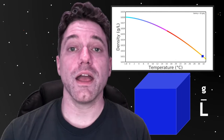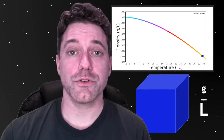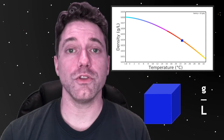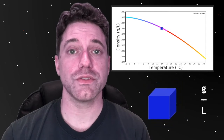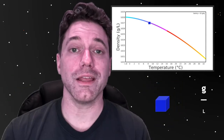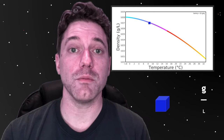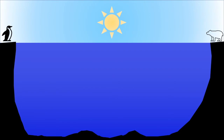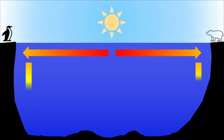Conversely, as temperature decreases, the volume of the cube will decrease, compacting the water and therefore making it more dense. Now, if we consider this schematic of the ocean interior, as warm equatorial water moves towards the poles near the surface, this water will get colder and more dense, making it sink.